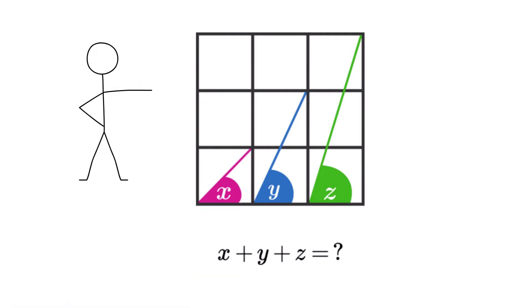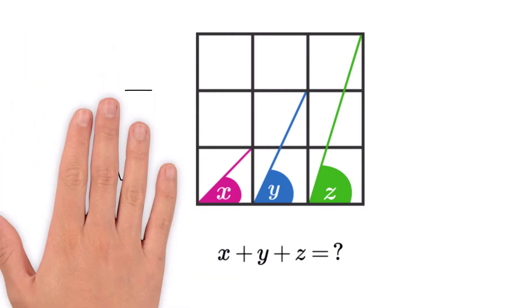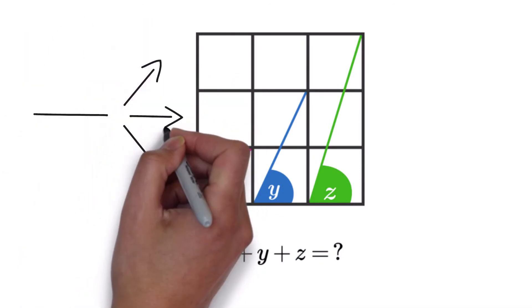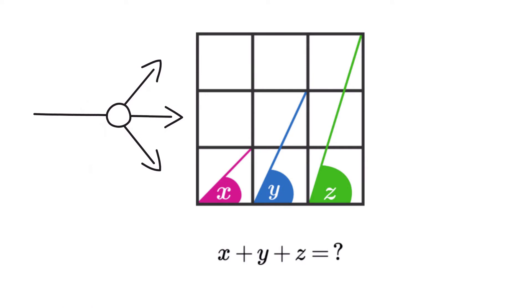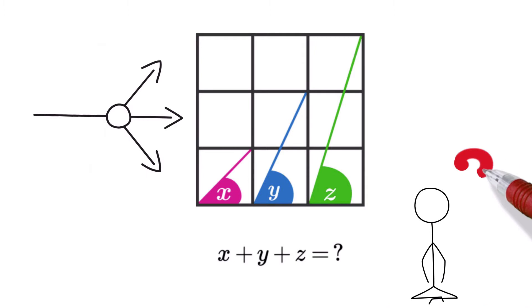Let's proceed with the problem. We have a big square as shown in the figure and we divide this big square into nine smaller congruent squares. So the question is what is the sum of the measures of these three shaded angles? That is what is x plus y plus z?